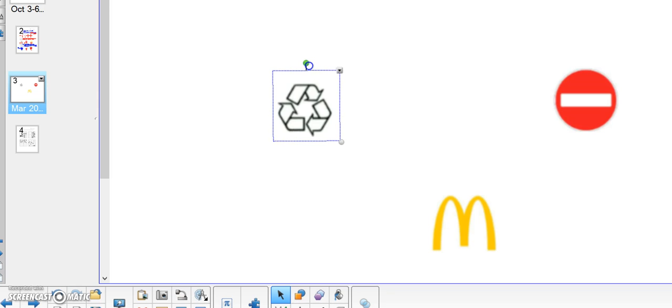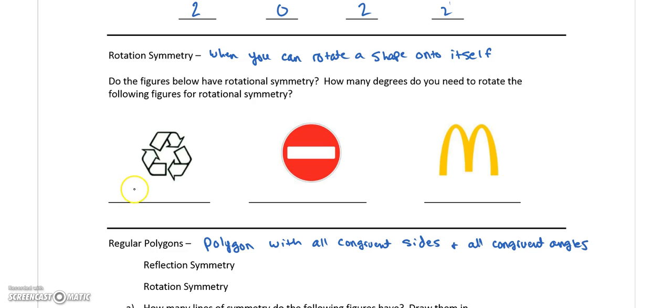So if I rotate it so that instead of this side being on the bottom, this side is on the bottom, that ends up being 120 degrees of rotation. So we can calculate that by thinking, okay, a full circle is 360. So I'm going like a third of a circle. There would be two thirds of a circle, and then that would be the entire circle. So if I take that 360 and divided by three, that gets me 120 degrees of rotational symmetry.